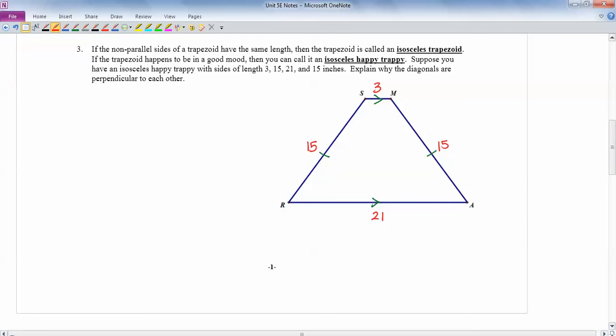It says explain why the diagonals are perpendicular to each other. Okay. So let's do this. To get the diagonals, let me draw SA. So here's one of the diagonals. Right there. Okay. We're going to use slope for this. Because if they're perpendicular, remember perpendicular lines have negative reciprocal slopes. So let's take a look at what their slopes are. So if I draw a line coming straight down here and then going straight across, if I can figure out the rise and the run, then I'm good to go.